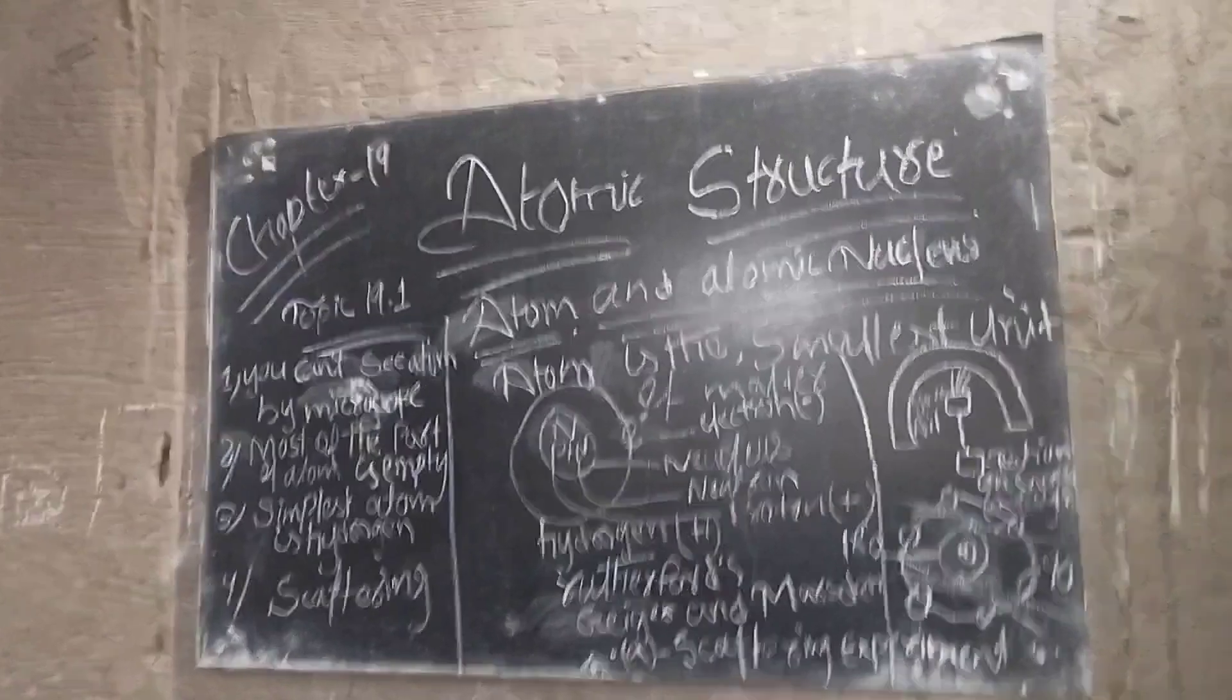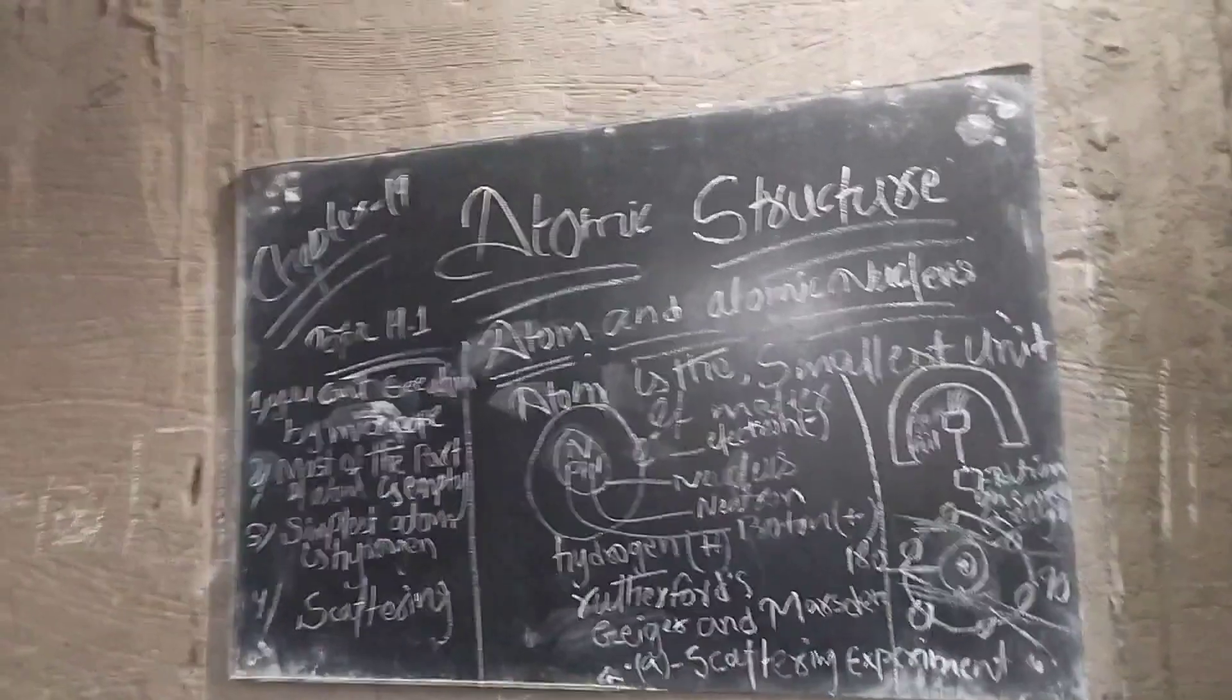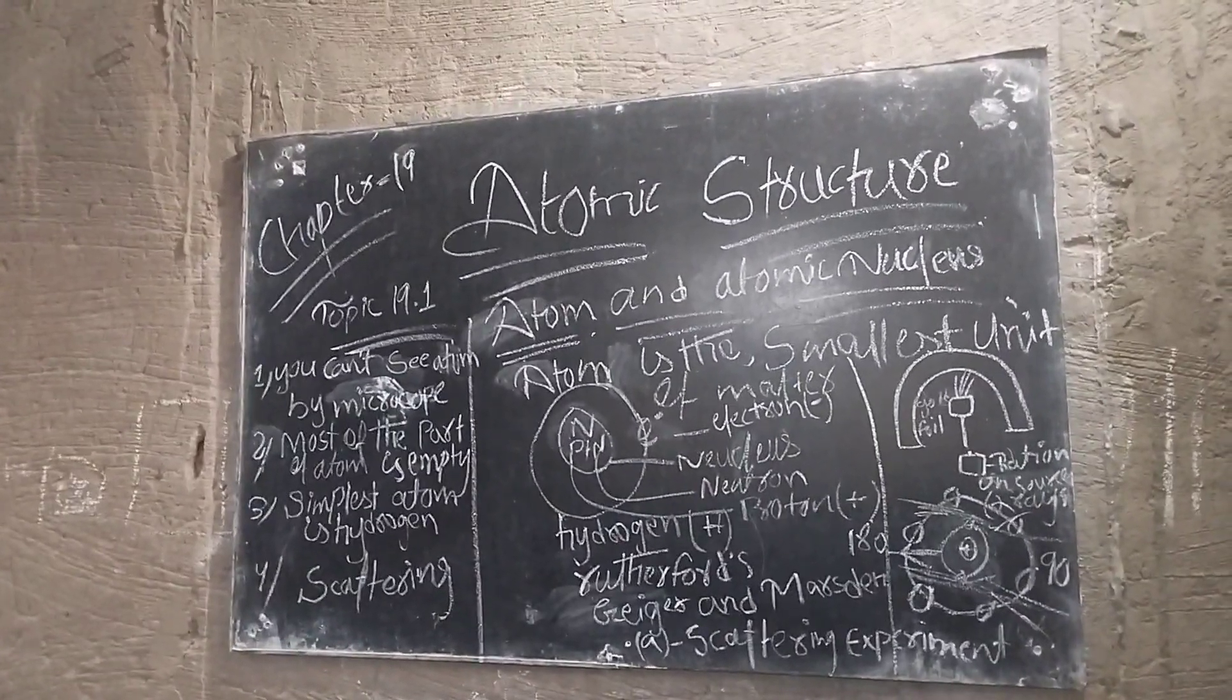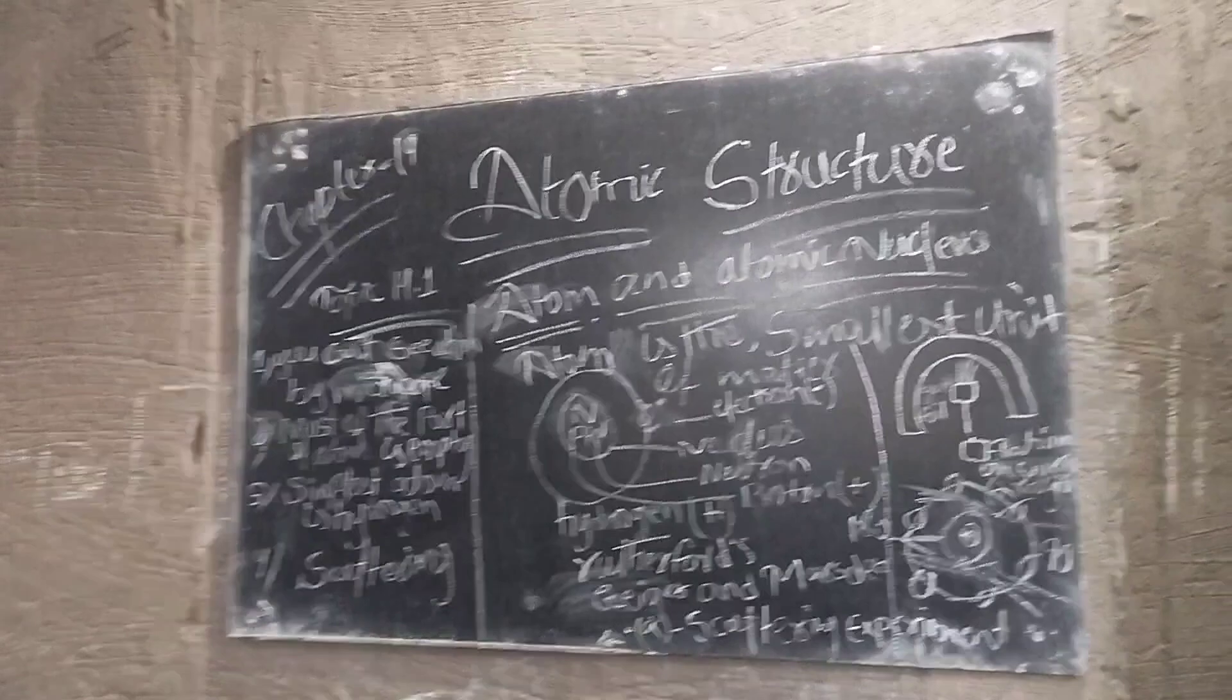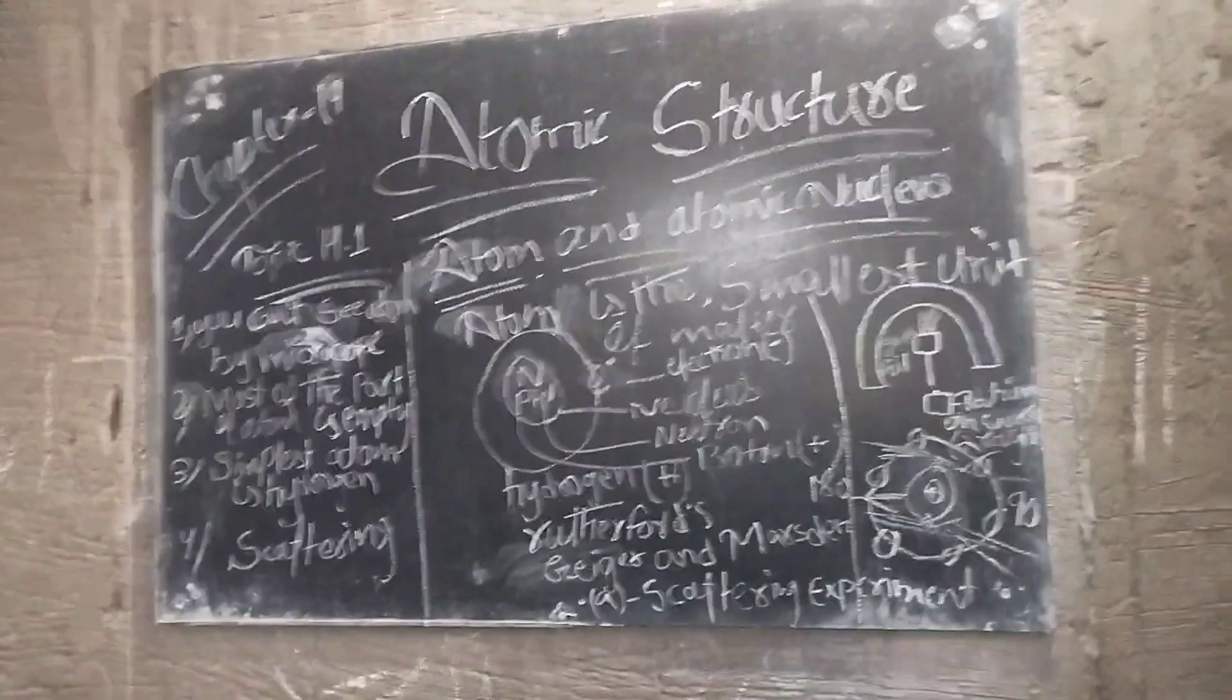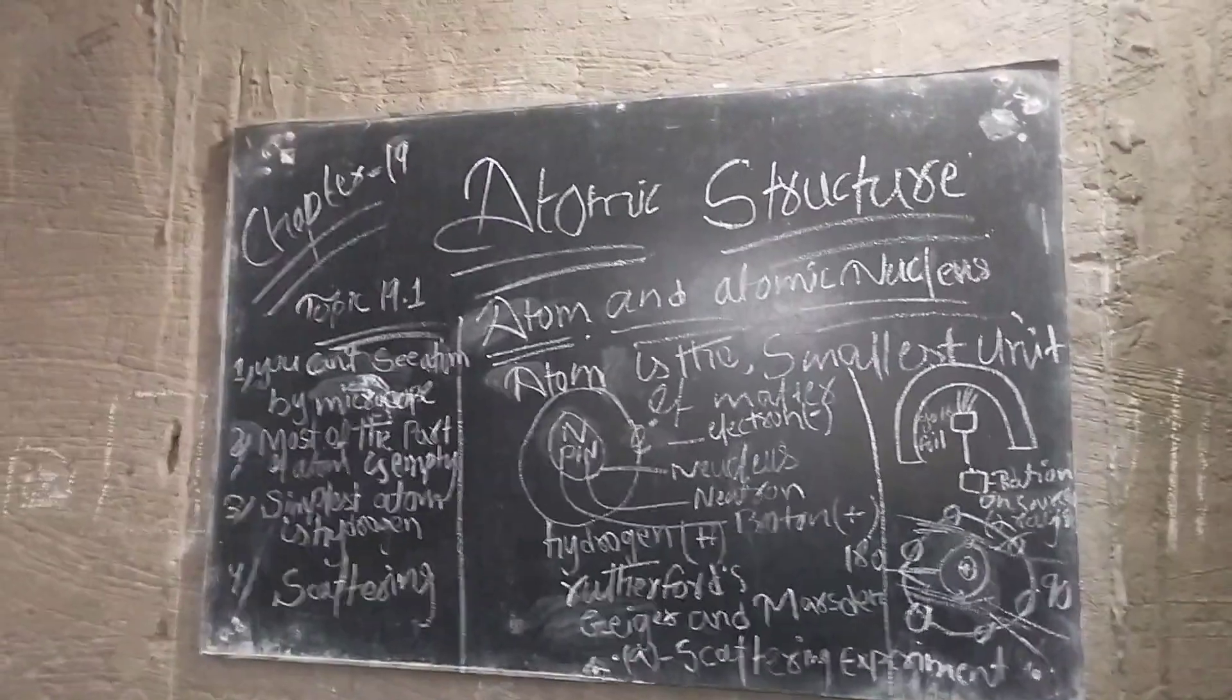The students used to do this experiment because they found a particle which is charged, with a gold shape. They had a source of alpha rays, and they had a gold foil. They have a ring-like shape, and they had a golden foil.